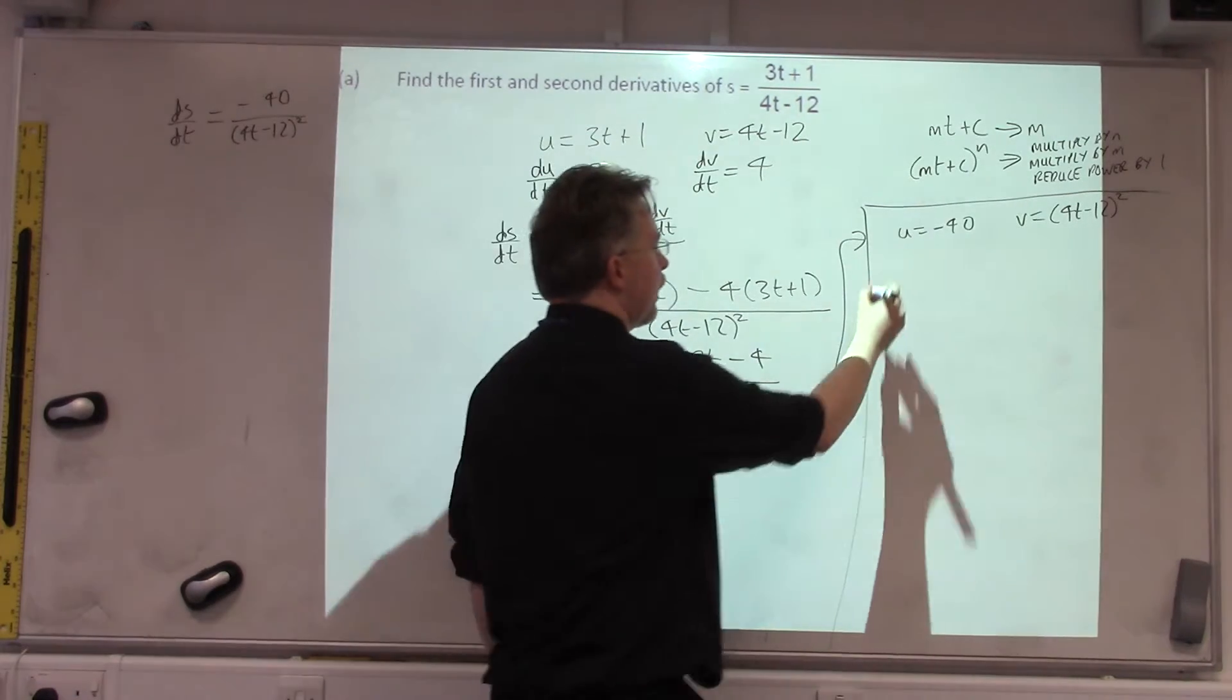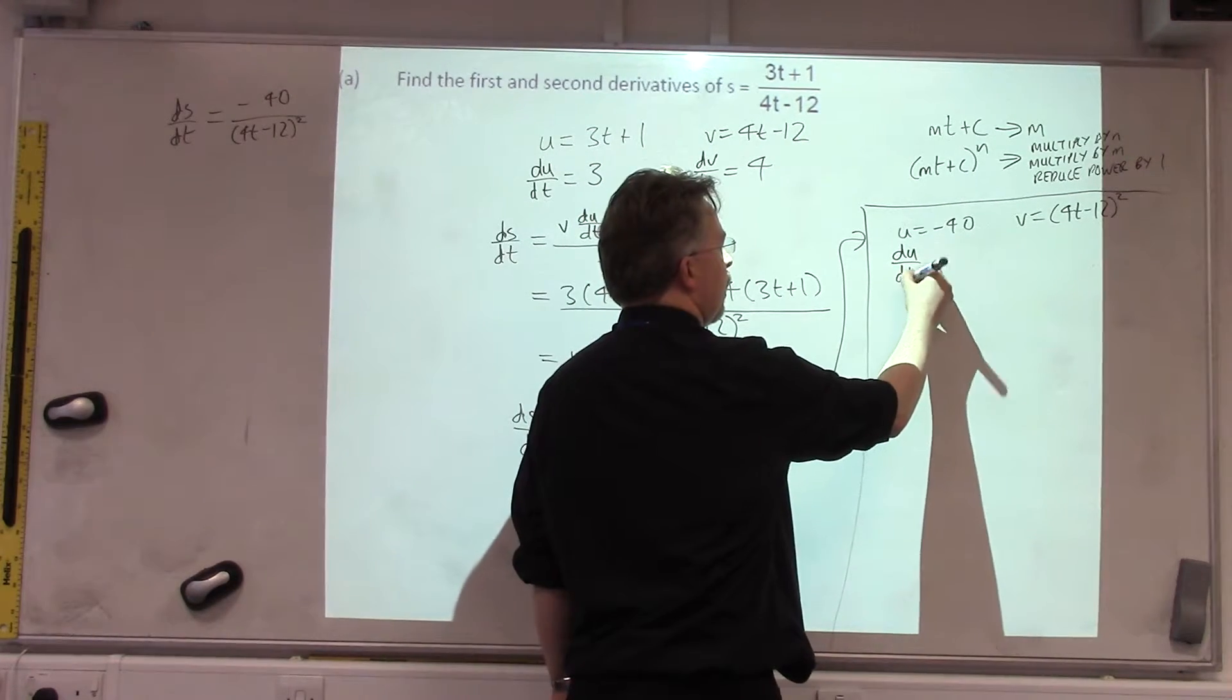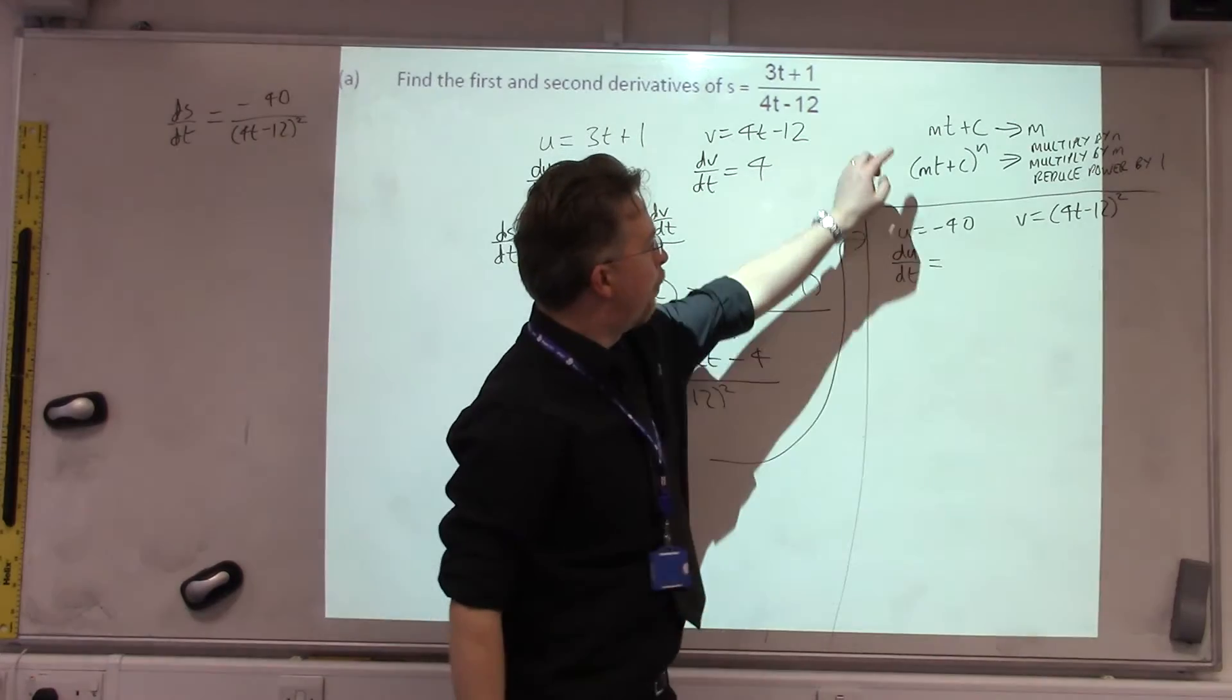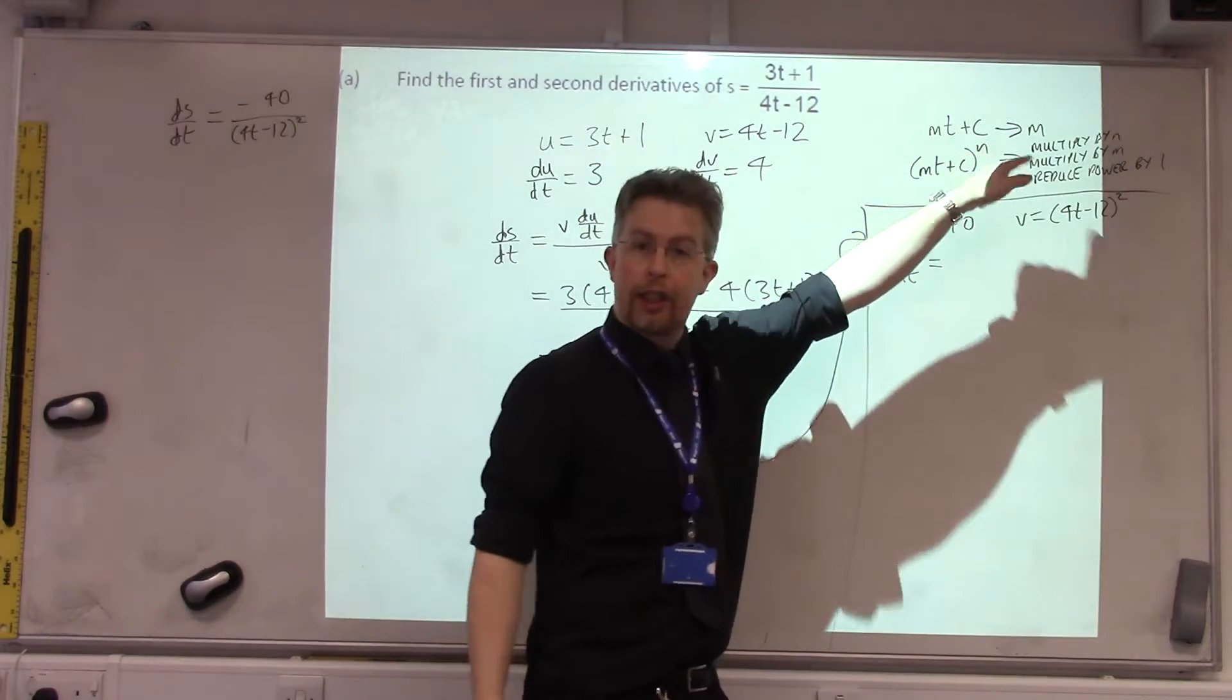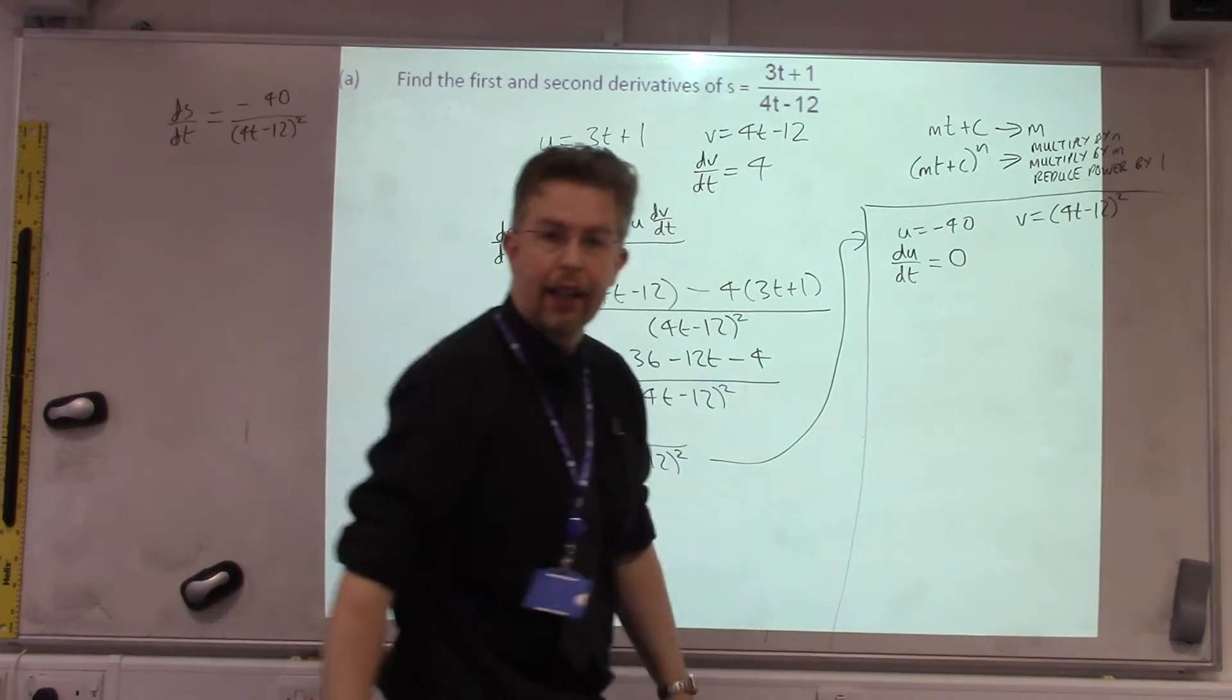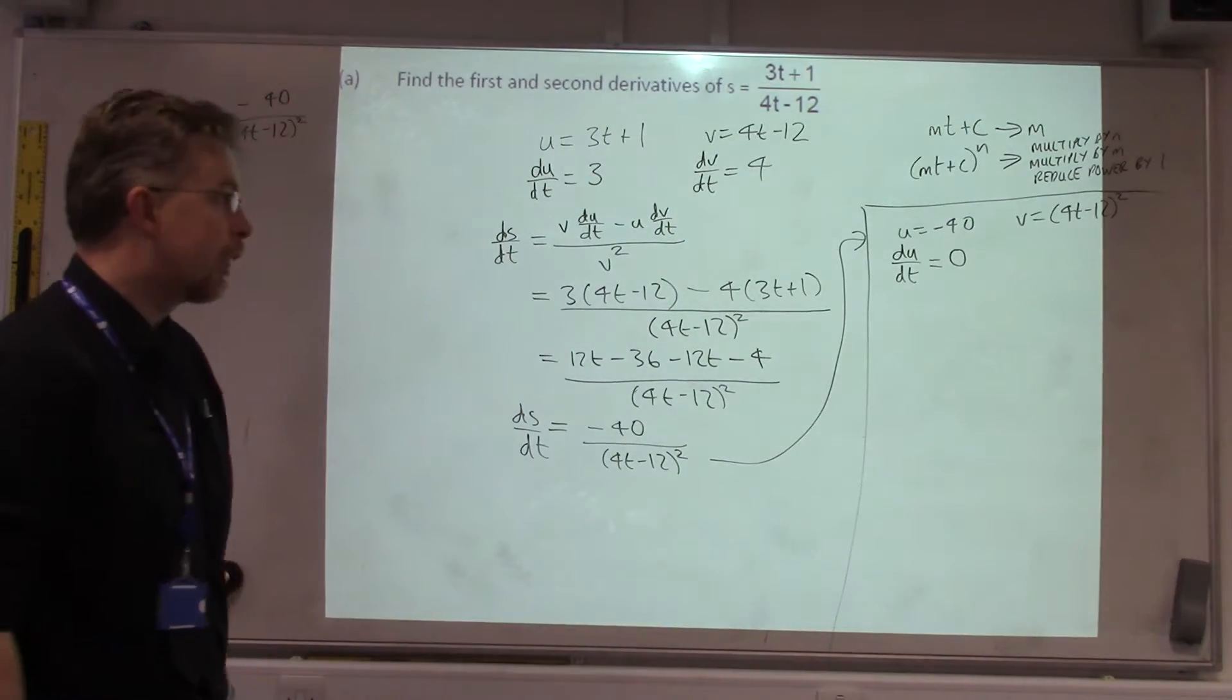DU by the T. Well, minus 40 is just the C, which disappears, so we get nothing. So, minus 40 differentiates to zero.